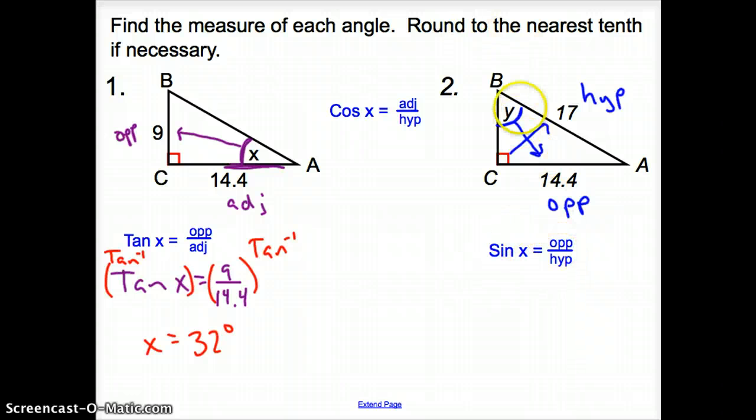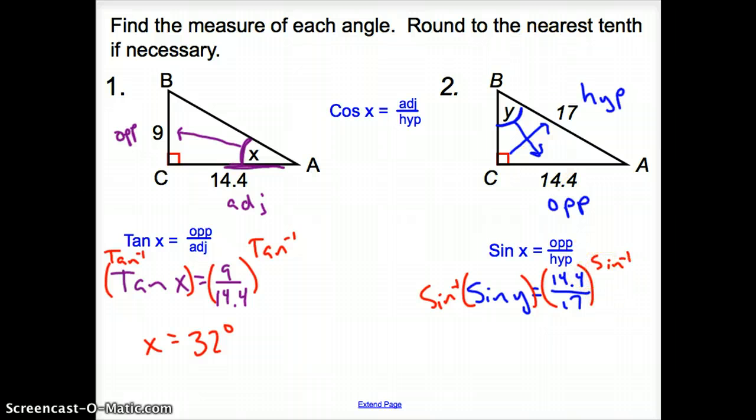So now we have sine of y. So it's just sine y equals the opposite, which is 14.4, that's going to go over 17. Now I have to undo this sine, and how do you do that? You have to take the inverse trig function. So I have to take sine to the negative first, punch it in your calculator. Same thing here. The inverse of sine. What happens? Those sines undo each other. So it's y now equals a degree measure of 58 degrees.